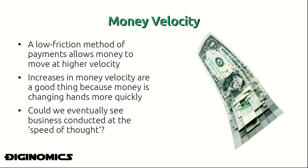Another interesting characteristic when we look at Bitcoin is money velocity. Money velocity describes the rate at which money units change hands. Because of the digital nature of Bitcoin and because there is no administration that needs to approve transactions, there is essentially no delay between sending and receiving money. We can expect money velocity to increase sharply in the years to come. This low-friction method of payment allows money to move at a higher velocity — traditionally, economists describe an increase in money velocity as a very good thing, because more people have access to the same amount of money with reduced delays.